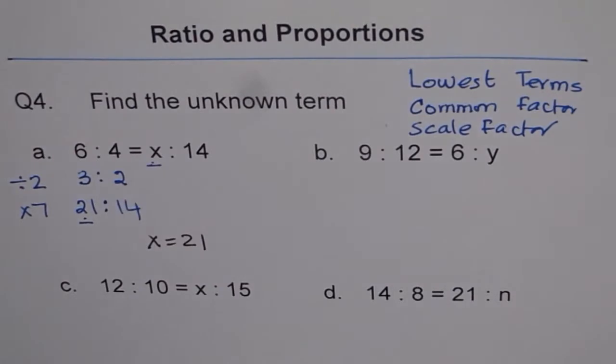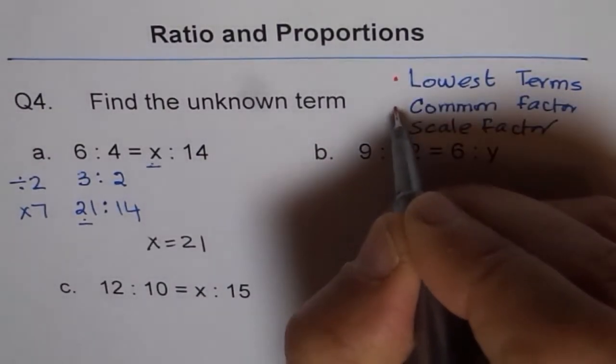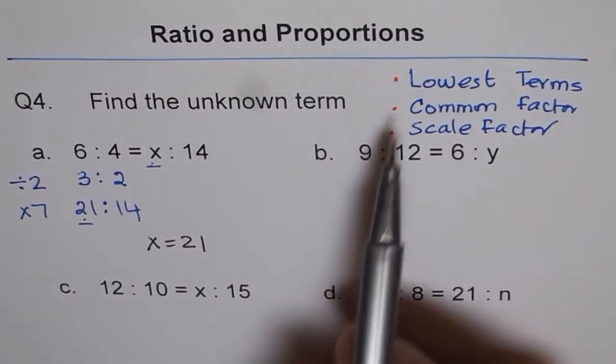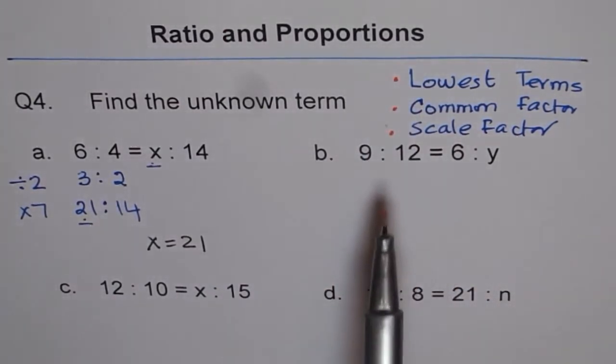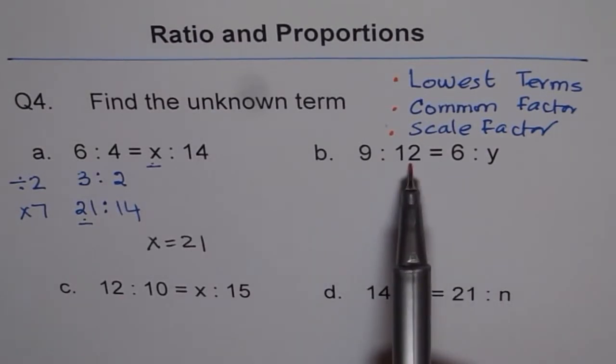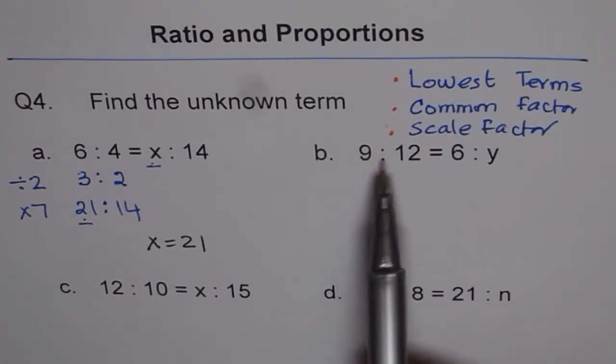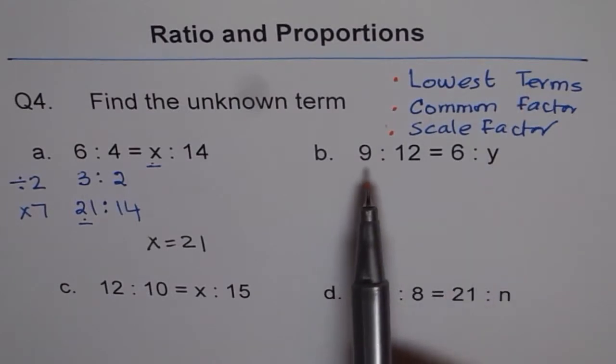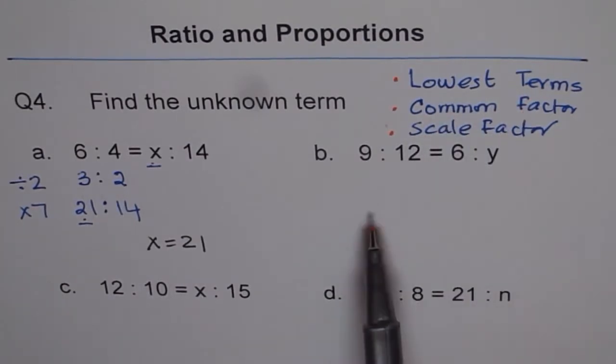So these are the steps to be followed for finding most of the answers of unknown in ratios and proportions. These are the 3 steps. When you see that you don't have a direct scale factor, then you have to write the terms in lowest terms. How do you get the lowest terms? By dividing by a common factor. And then find scale factor.